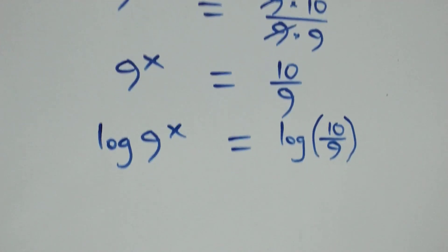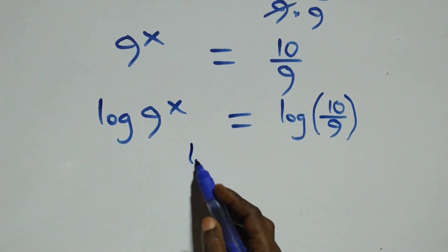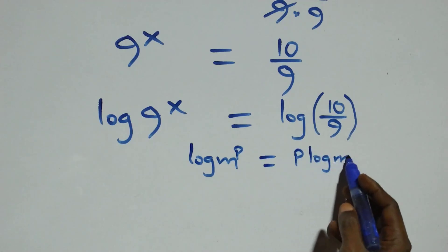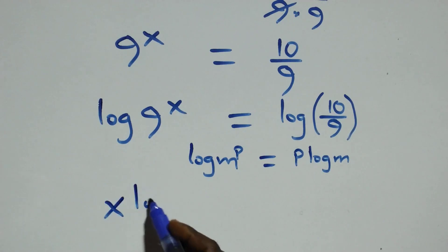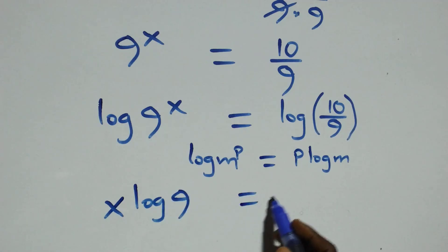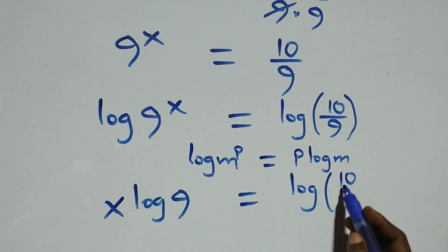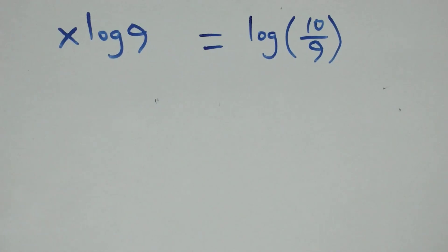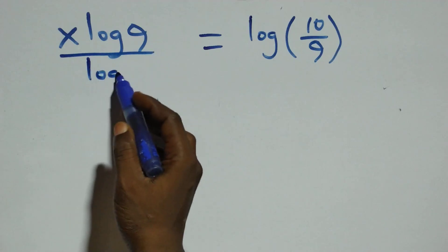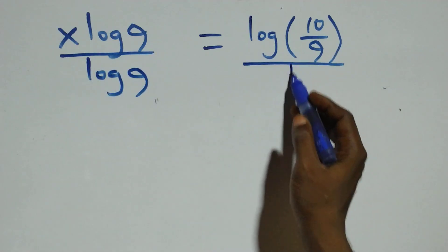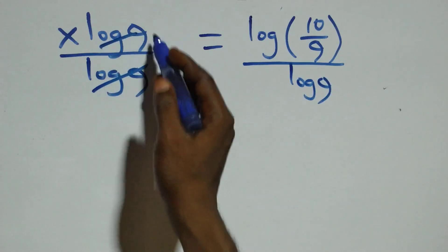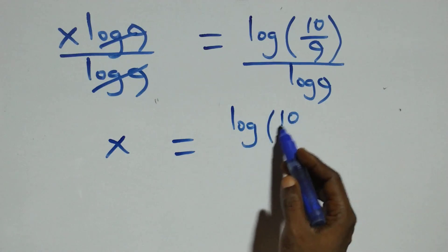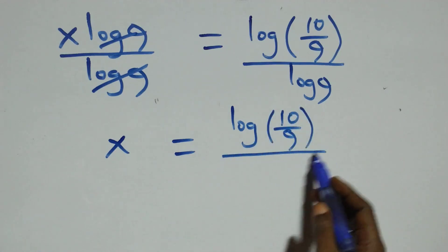We apply the power log rule, where log of m raised to power p is the same thing as p times log m. This becomes x times log 9 equals log of 10 over 9. Then we divide both sides by log 9. Log 9 cancels with each other, and we have x equals log(10/9) divided by log 9.